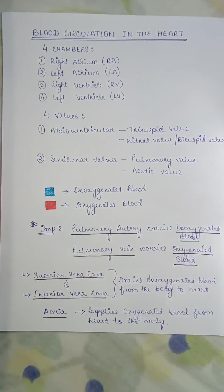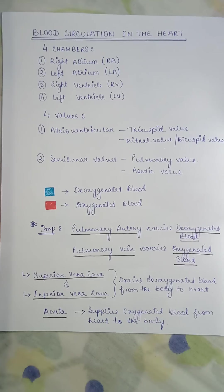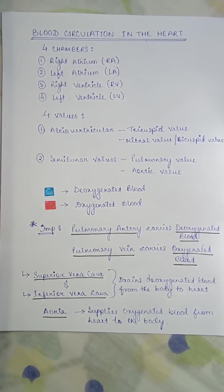Hello everyone. In my last videos I discussed the bones, joints, and ligaments of the foot. Today we will move from the bones to an organ — the heart. The heart is the main organ for the circulatory system. We will understand what happens to the blood in the heart: how the blood gets pumped out to the body and how deoxygenated blood is converted to oxygenated blood. To know all this, we first need to understand some basic things about the heart.